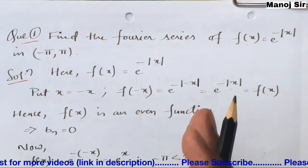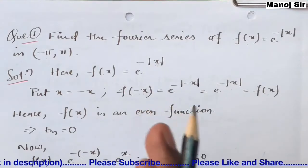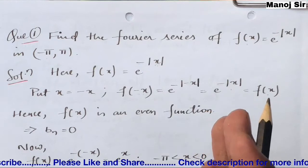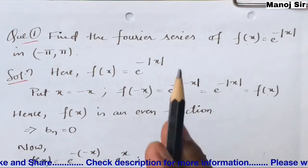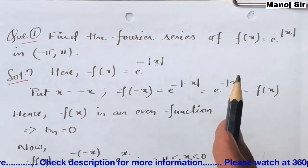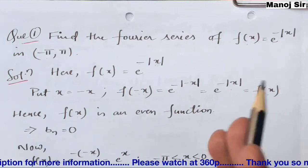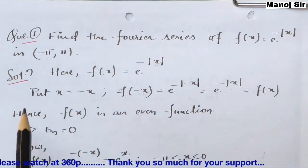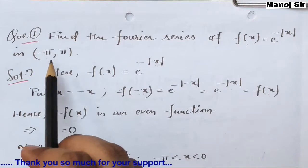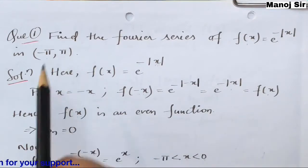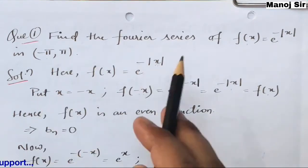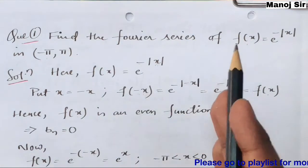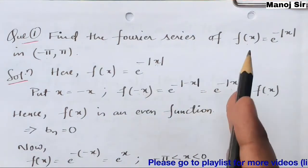We need to check whether this function is an even function, odd function, or neither of both. We check this when the limit is from minus a to plus a. Here the limit is given as minus pi to plus pi, so we will check whether f(x) is even or odd.